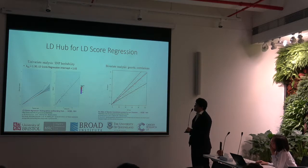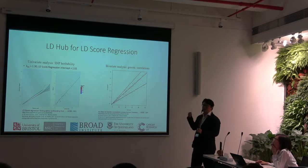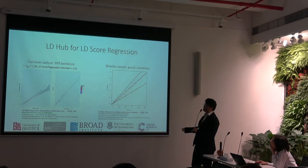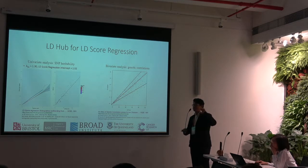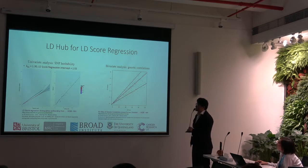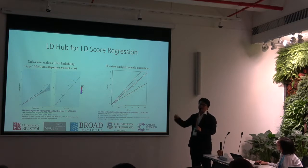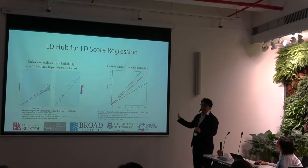LDHub is built on LD score regression, developed by the Broad Institute. It uses GWAS summary results to tell you how heritable your trait or disease is, as well as the genetic correlation between two traits. The idea is simple: if a SNP has more LD friends, it has a higher probability of tagging a causal variant, and its effect size is in general larger. So why not correlate the LD score with the effect size — here represented as chi-square statistics? The idea is simple but very successful, garnering about 700 citations in two years.